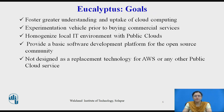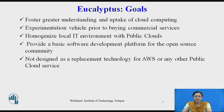The goals of Eucalyptus are: first, to foster greater understanding and uptake of cloud computing, providing a vehicle for extending what is known about the utility model of computing. Second, to serve as an experimentation vehicle prior to buying commercial services, providing a development, debugging, and tech preview platform for public clouds. Third, to homogenize local IT environments with public clouds — meaning AWS functionality locally makes moving to Amazon Web Services easier, cheaper, and more sustainable. Fourth, it provides a basic software development platform for the open source community, similar to the Linux experience.